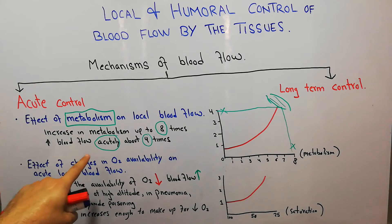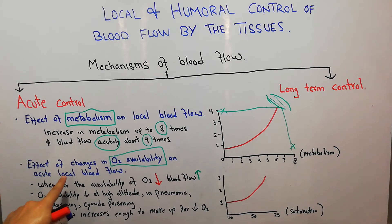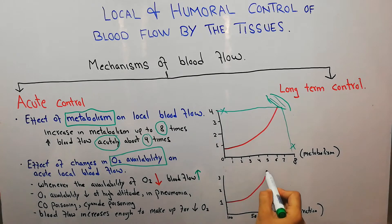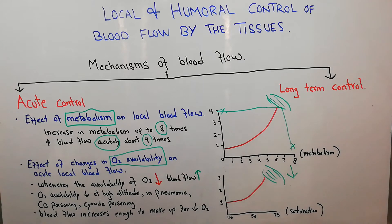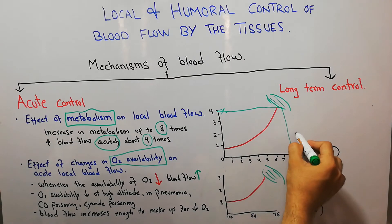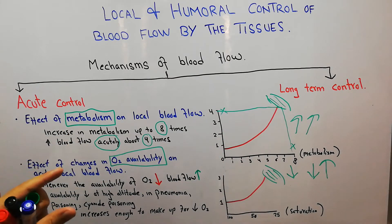The second mechanism by which blood flow changes acutely is the effect of changes in oxygen availability on acute local blood flow. For example, if the amount of oxygen reaching a muscle decreases, blood flow increases. Oxygen is very important for metabolism; when its availability decreases, blood flow to that tissue will increase. So just as increased metabolism leads to increased blood flow, a decrease in oxygen availability also leads to increased blood flow.